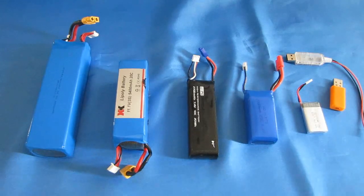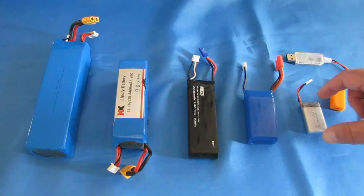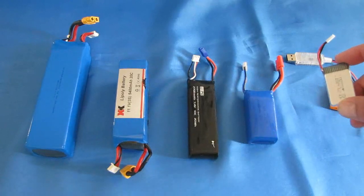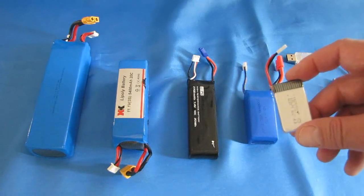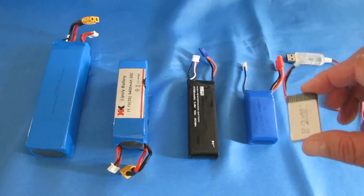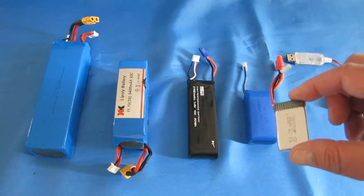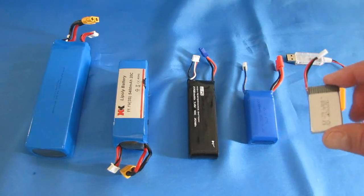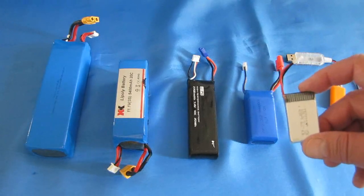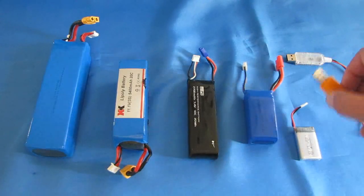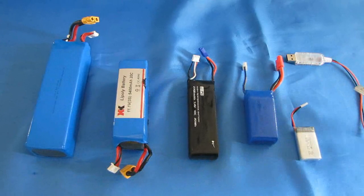Most people when they start flying wonder if they should buy a balance charger. Some even ask, what is a balance charger? Well, if you're starting out, you're normally flying with little single cell batteries, 3.7 volt batteries called 1S batteries. Those do not need a balance charger. The little charger that comes with your particular quadcopter should be more than sufficient.